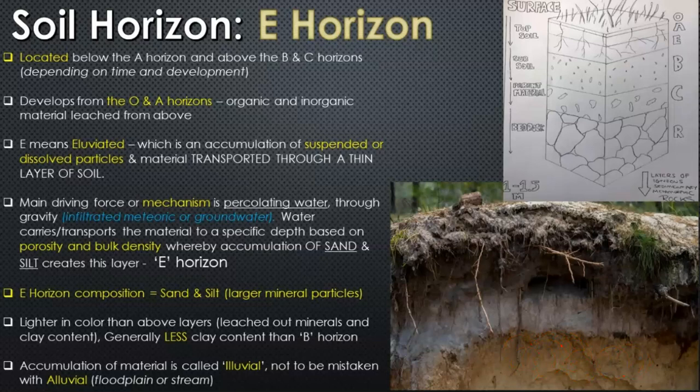So the E horizon is that layer of soil left with residual mineral composition and small amounts of organic material, because all of the leaching, percolation, and eluviated materials are being transported through the E horizon down to the B horizon below.